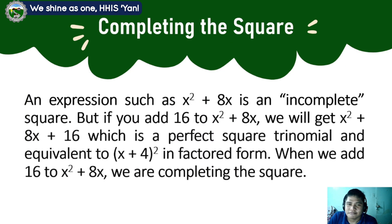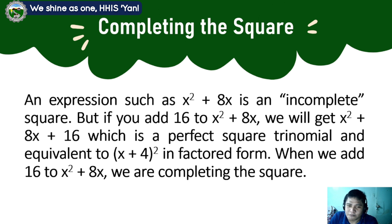An expression such as x squared plus 8x is an incomplete square. But if we add 16 to x squared plus 8x, we will get x squared plus 8x plus 16, which is a perfect square trinomial, and equivalent to x plus 4 squared in factored form. When we add 16 to x squared plus 8x, we are completing the square.